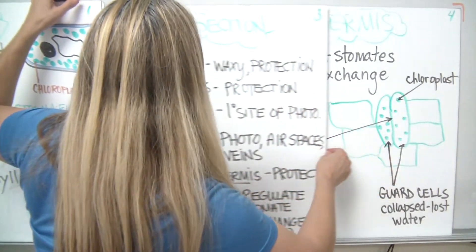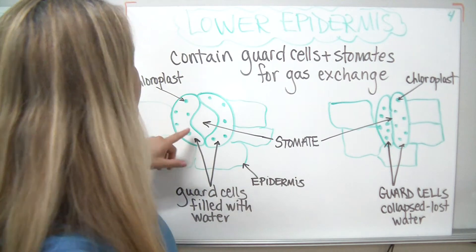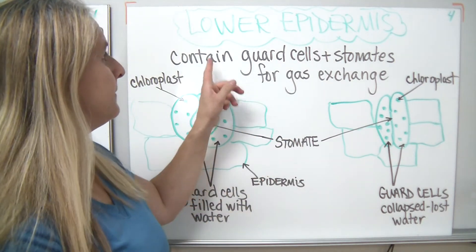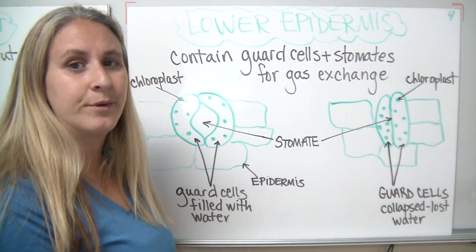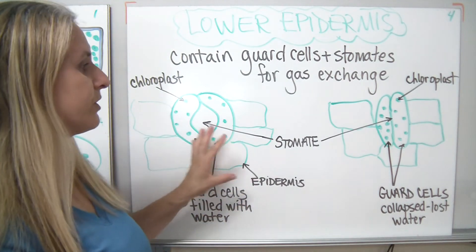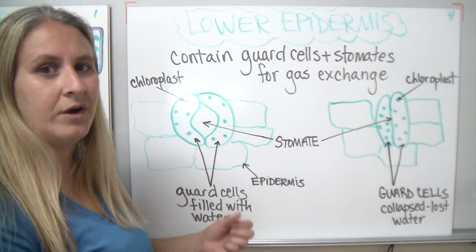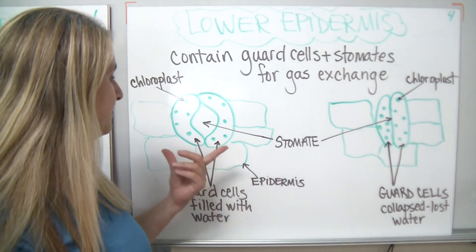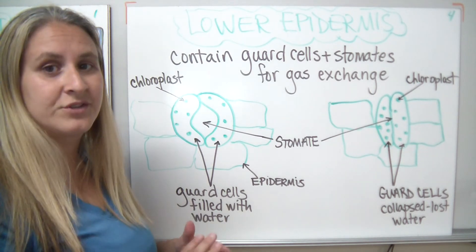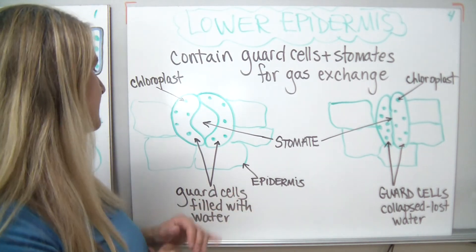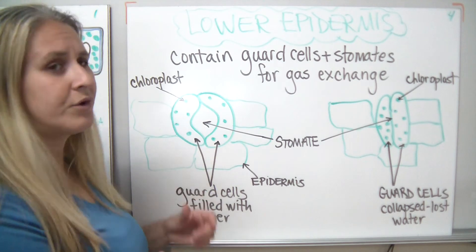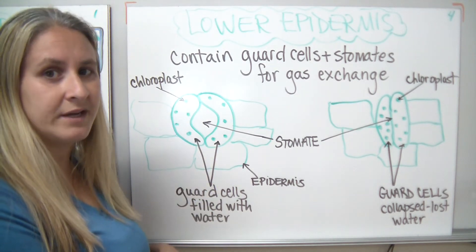Now that we've gotten through the leaf, we're going to zoom in on that lower epidermis that contains the guard cells and the stomates. That lower epidermis with the guard cells and stomates allows for gas exchange. We're going to have two views that you're going to draw. You're going to draw the left-hand view showing the guard cells filled with water. We're going to do a demonstration in class, and we're also going to be looking at these underneath the microscope. This is a microscopic view of what the guard cells look like on the lower side of the epidermis.